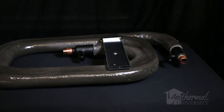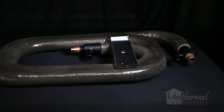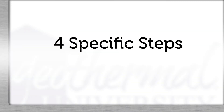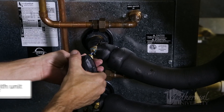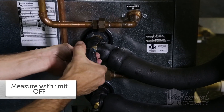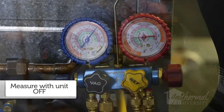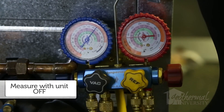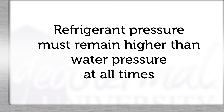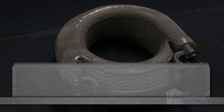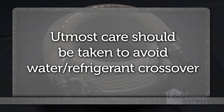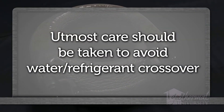If a coaxial refrigerant leak is suspected, there are very specific steps and tests to follow. Before starting either step, measure the water pressure with the unit at rest and having been off for a while. Also measure the refrigerant pressure at rest. The refrigerant pressures need to remain higher than the water pressure at all times. When you have a refrigerant to water crossover or suspect crossover, the utmost care must be taken to avoid water entering the refrigerant system.